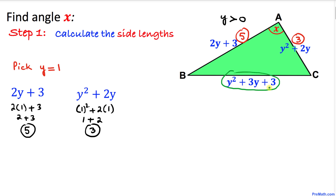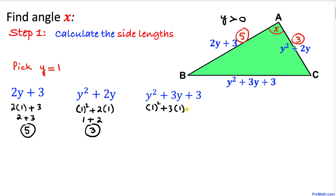Finally, let's focus on the last side, y squared plus 3y plus 3. Replacing y with 1, we get 1 squared plus 3 times 1 plus 3, which gives us 1 plus 3 plus 3 equal to 7. So this side turns out to be 7 units.